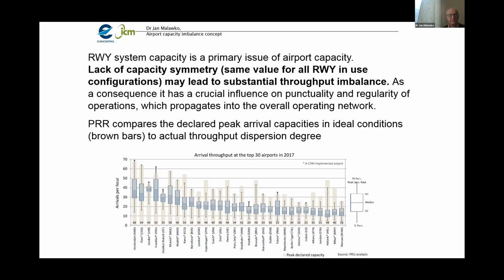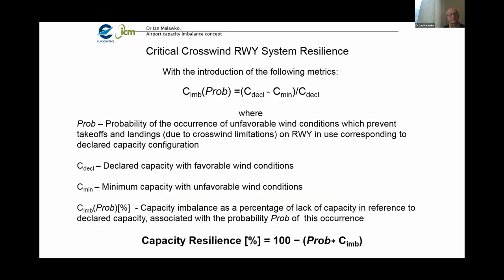Runway system capacity is a primary issue of airport capacity — like no other element of the airport capacity chain, it is sensitive to external factors that can rapidly cause capacity exhaustion. Lack of capacity symmetry may lead to throughput imbalance. The Performance Review Report compares declared peak arrival capacity in idle conditions to actual throughput dispersion. The difference between those values is the declared capacity margin, which represents significant dispersion among different airports. Capacity imbalance is expressed as a percentage of capacity loss relative to declared capacity, associated with the probability of its occurrence.